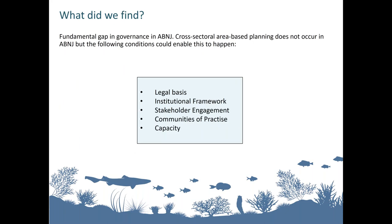At present, cross-sectoral area-based planning doesn't occur in ABNJ. However, through the analysis it's been identified that marine spatial planning can be developed to support cross-sectoral planning. Some challenges still remain which may be possible to overcome. One fundamental reason for the gap is governance in ABNJ. The report highlights several conditions which could support cross-sectoral planning in ABNJ.